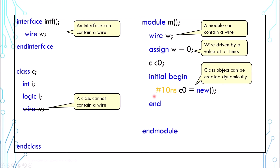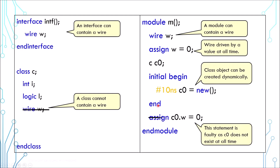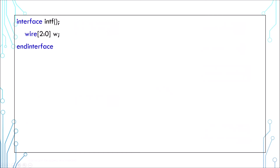Just like in real life, a wire is a wire — it does not appear suddenly just when you need it. So the wire carries a rather hardware-oriented concept. Class, on the other hand, is dynamic; you can instantiate it at any time, or you can choose not to instantiate it at all. This kind of contradicts the hardware nature of a wire. Following this logic, it is also understandable that a class cannot instantiate an interface, nor can it instantiate a module.